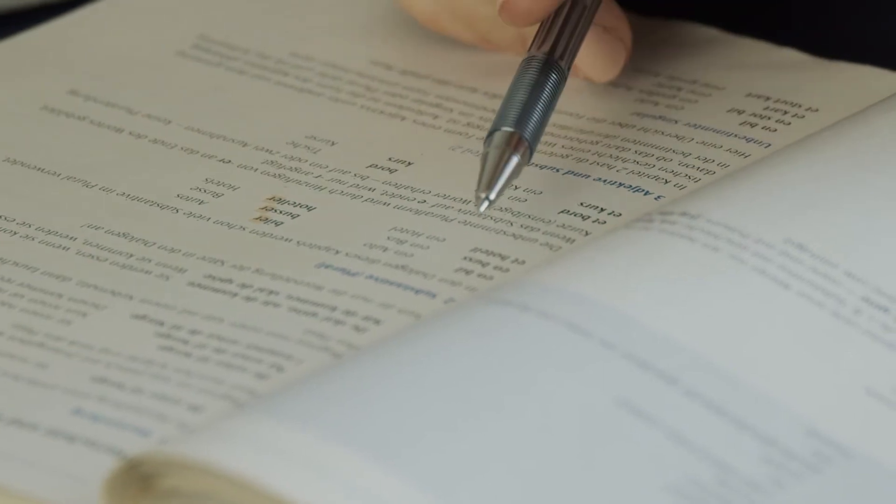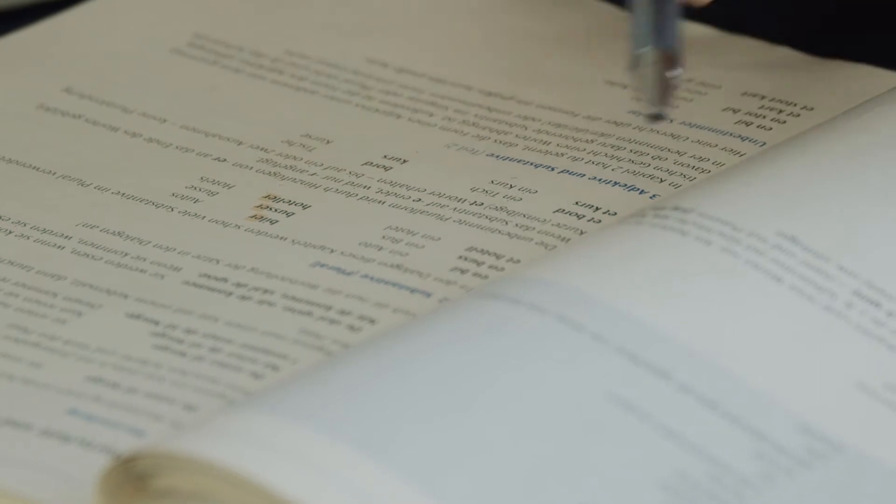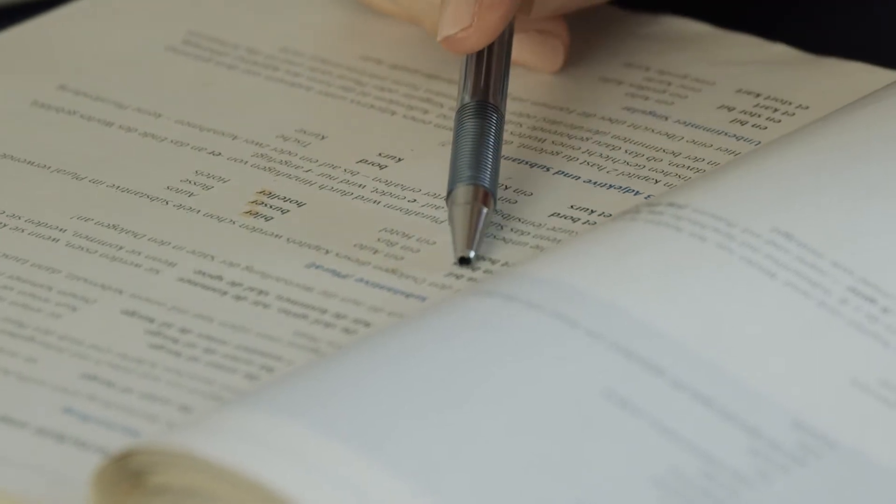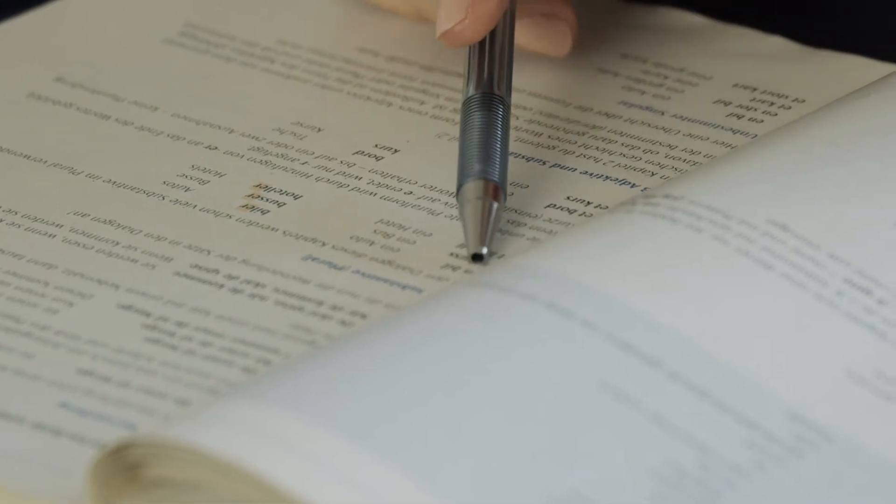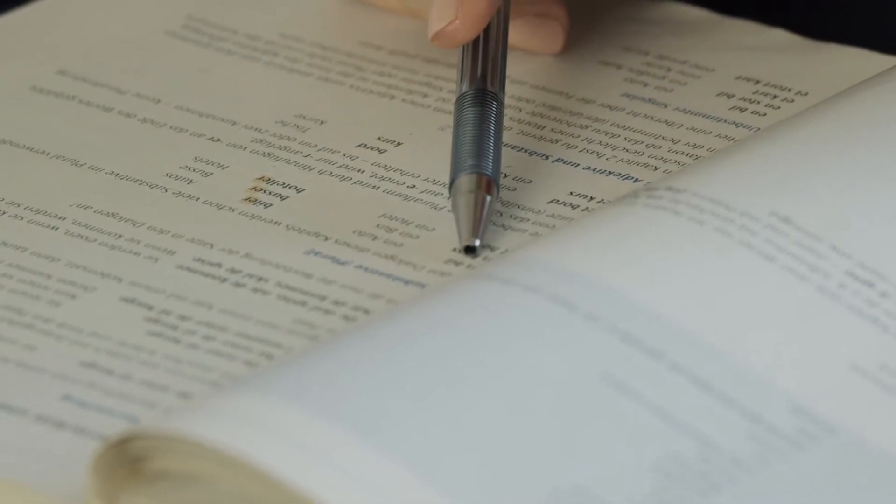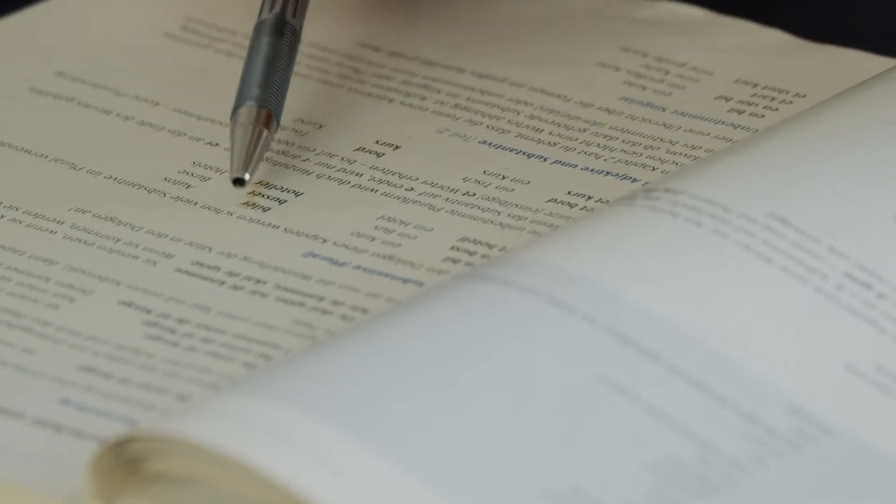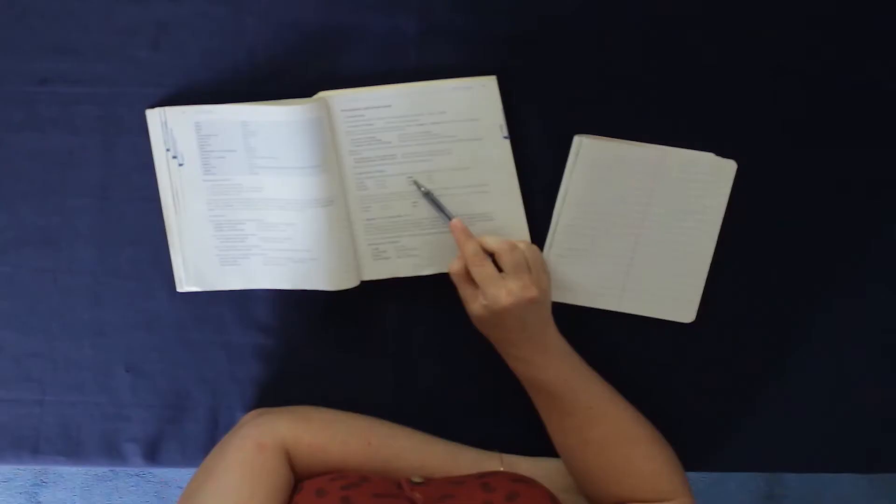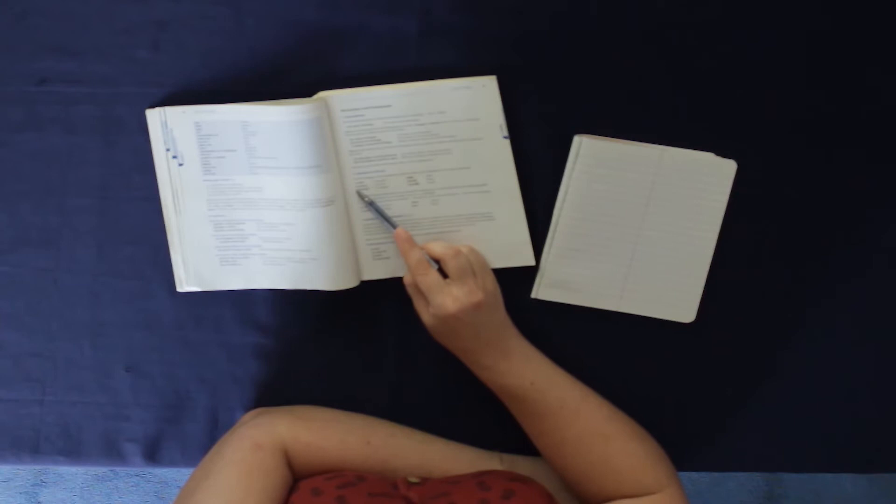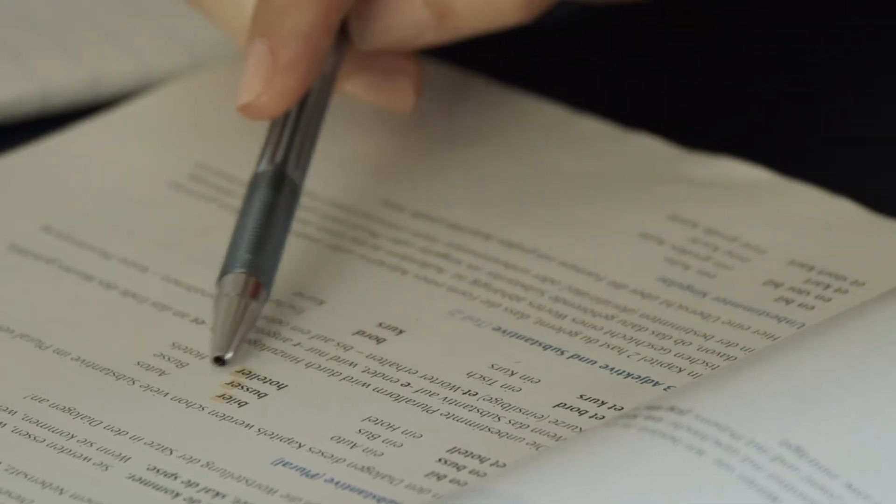Alright, so when we have a noun such as Bil which is the car, we can add the article en Bil, a car, and to form the plural we would add -er to the end. Biler, cars. It's the same with en Buss, a bus, and the plural would be Busser.